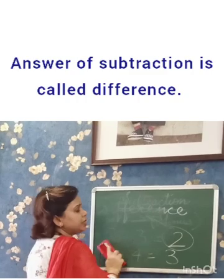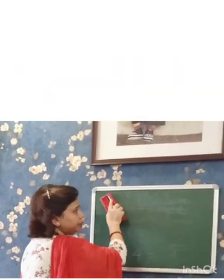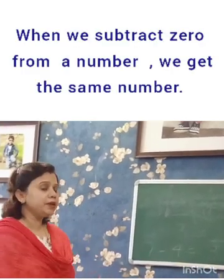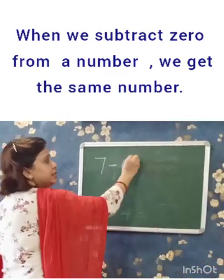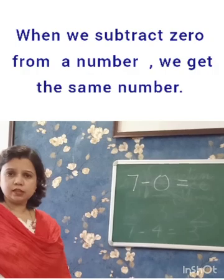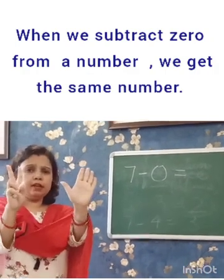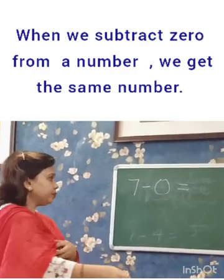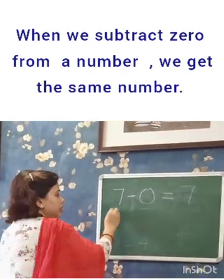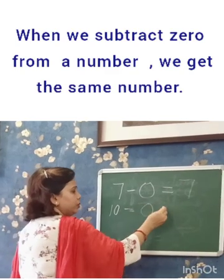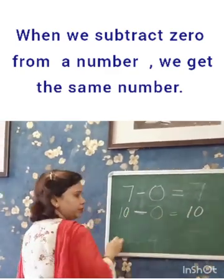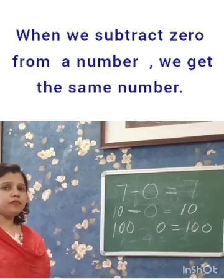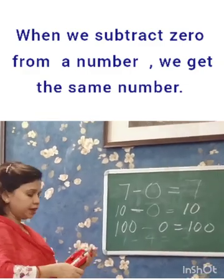Now let us learn some properties of subtraction. When we subtract 0 from a number, we get the same number. 7 minus 0 — 0 means nothing, so from 7 we take out nothing. So what is there? The same number: 7. So 7 minus 0 equals 7. 10 minus 0 equals 10. 100 minus 0 equals 100. When we subtract 0 from a number we get the same number.